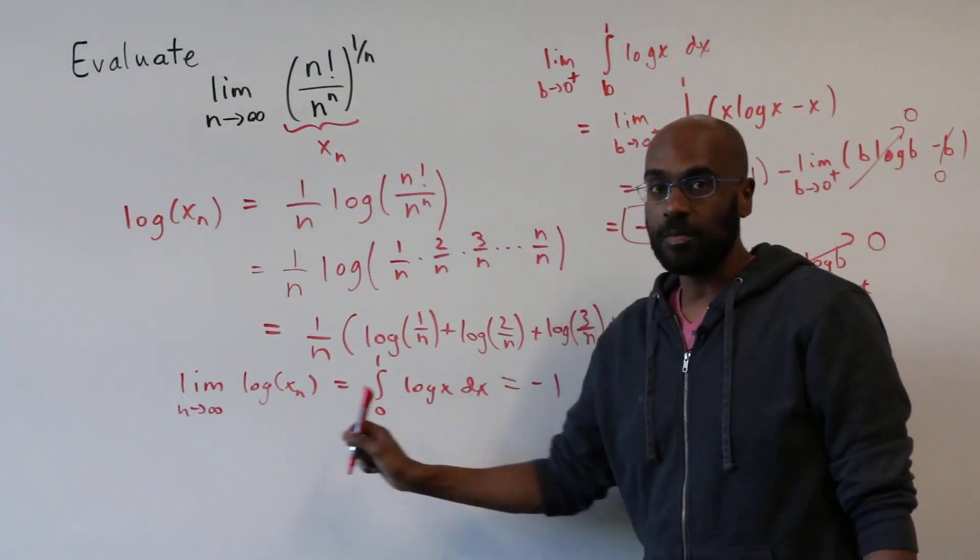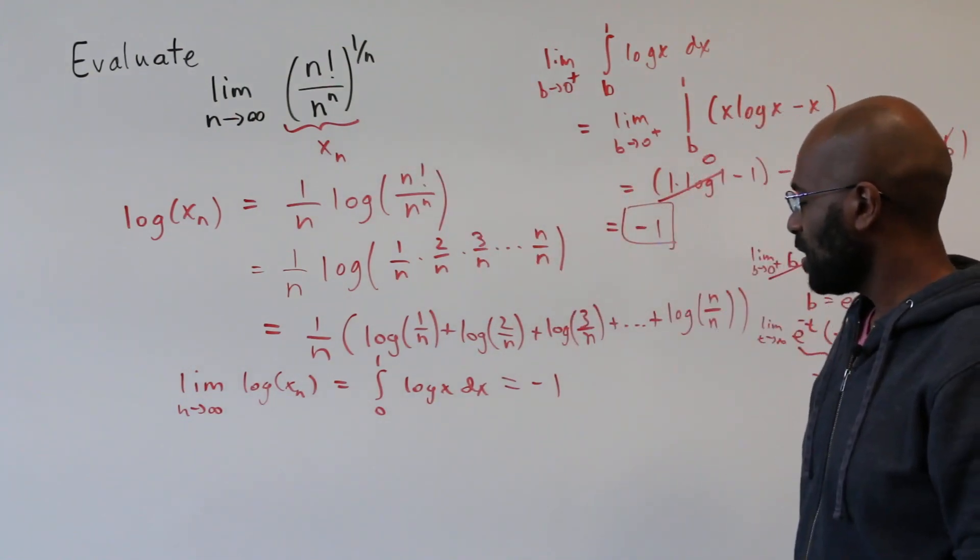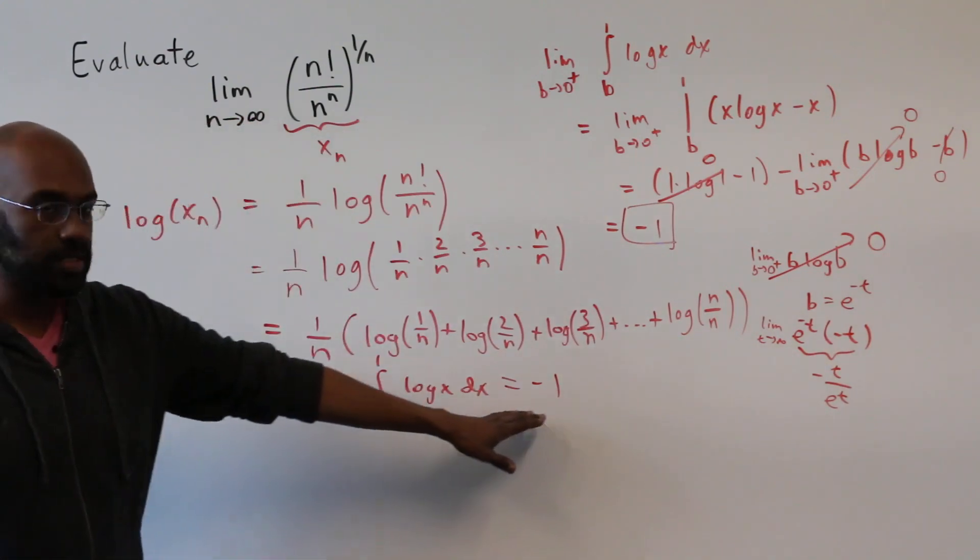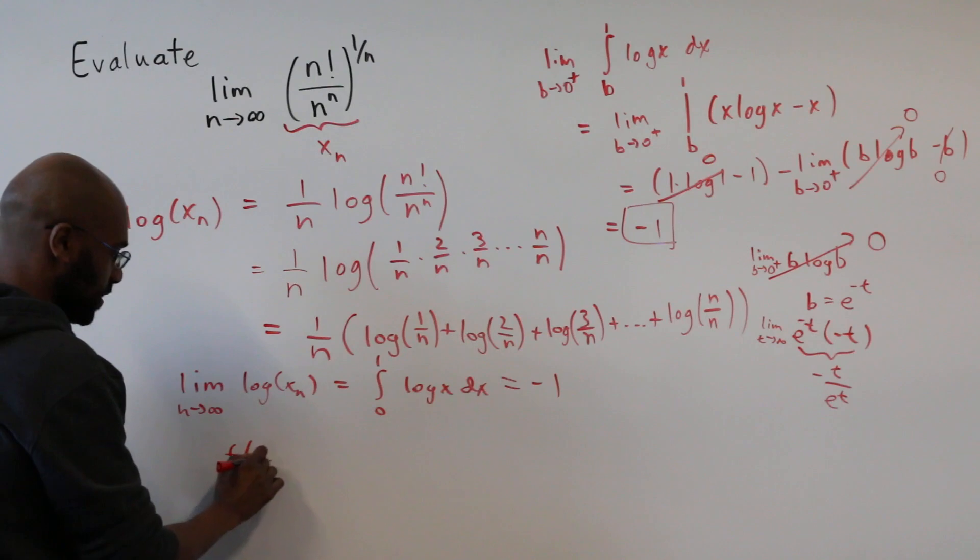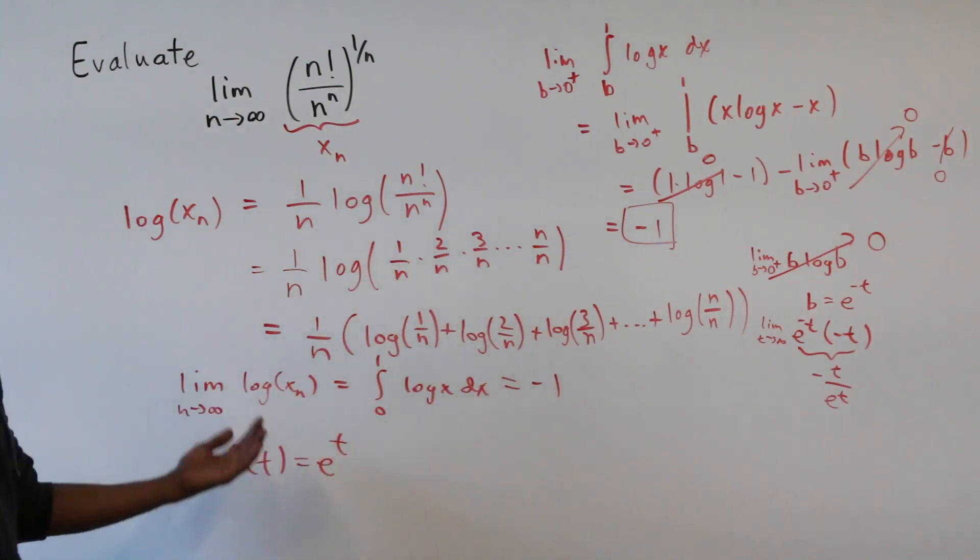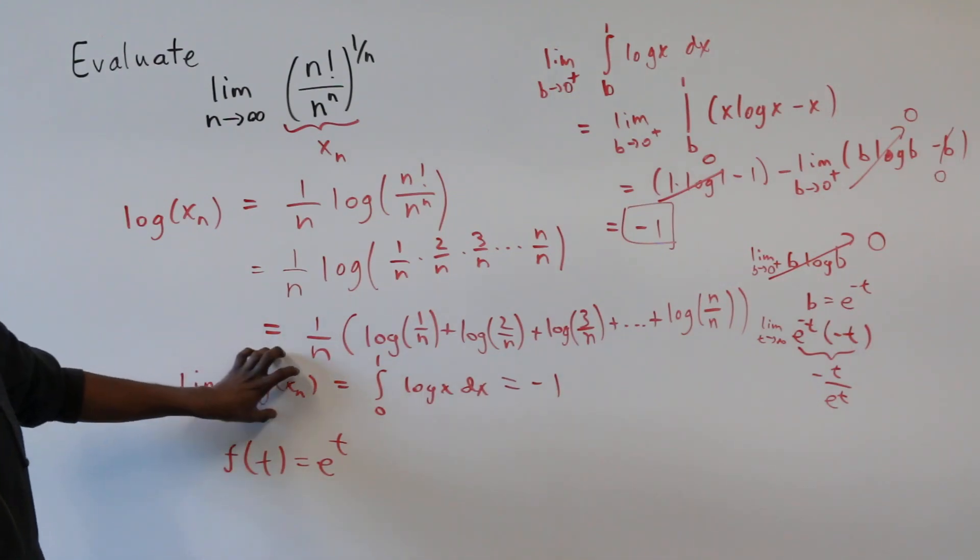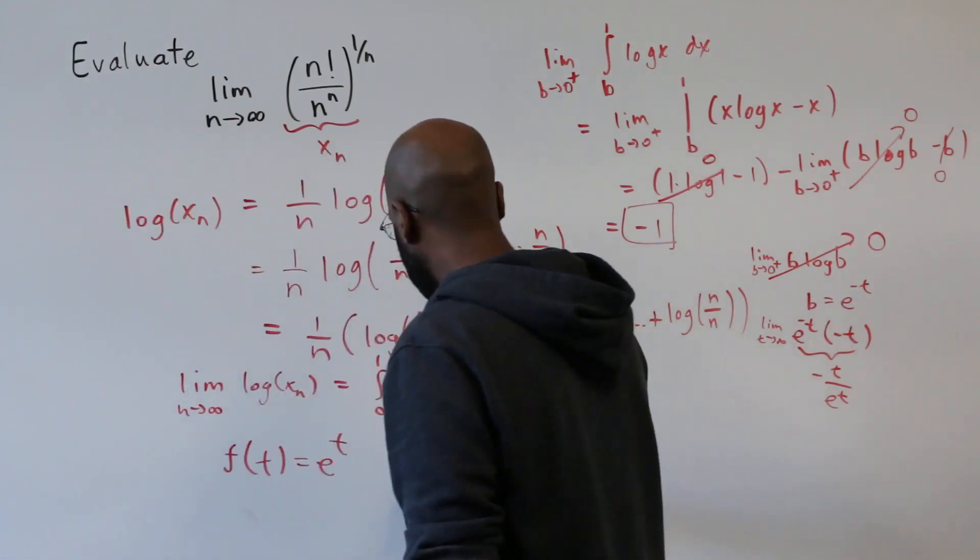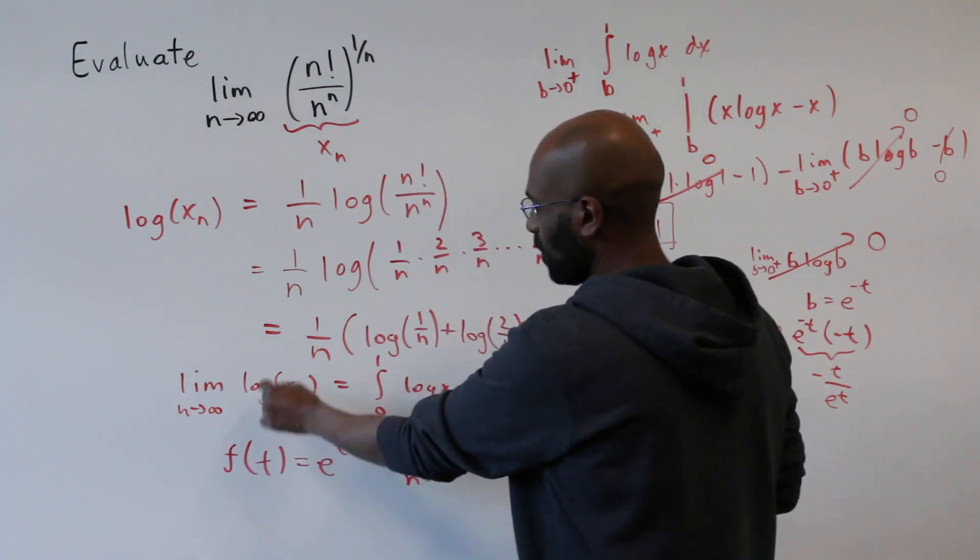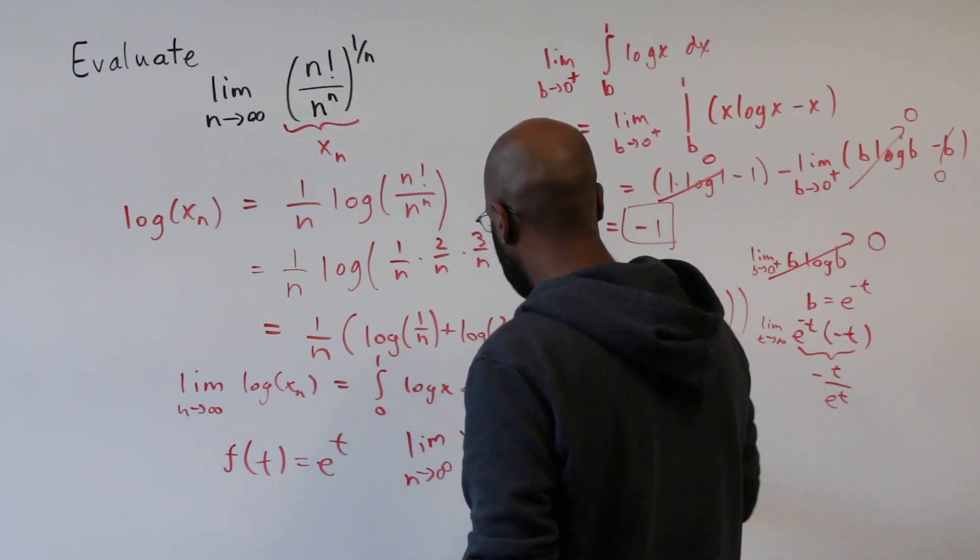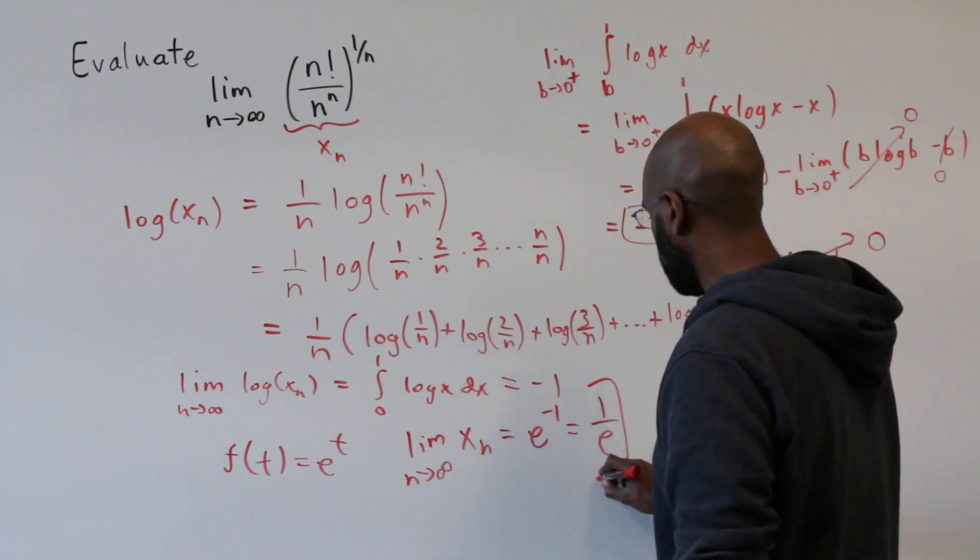Cool, so now we know what happens to the logarithm of our sequence that we're interested in finding the limit of. Now, if the logarithm is going to negative 1, then we can apply the function f of t equal to e to the t, which is a continuous function. So if the limit of this sequence goes to negative 1, then the limit of e raised to the sequence, e to the log xn, which is xn itself, is going to be e to this value. And so we get 1 over e as our limit.